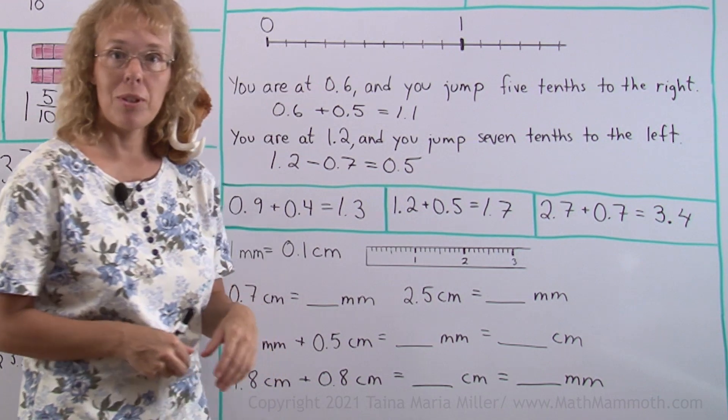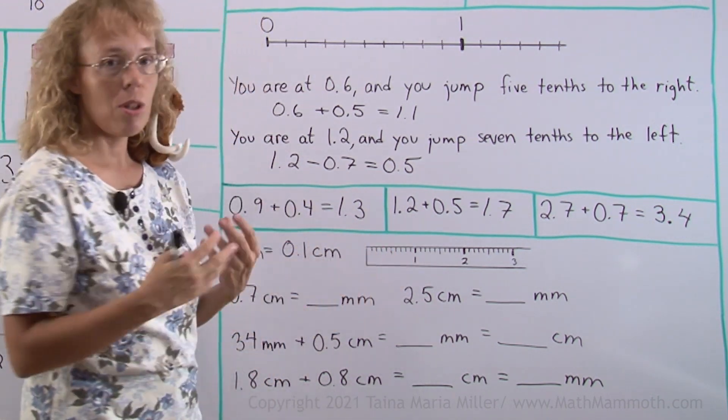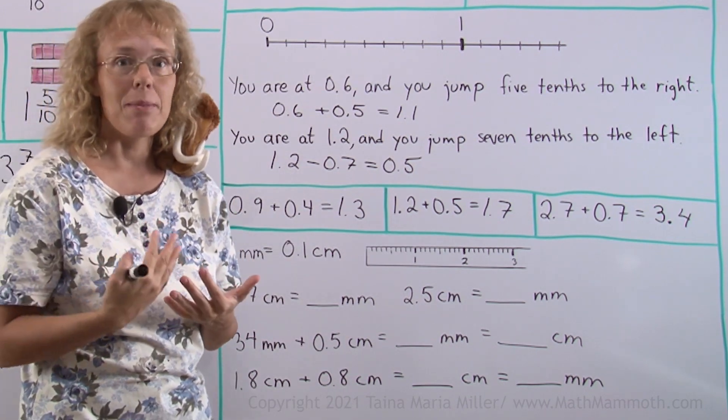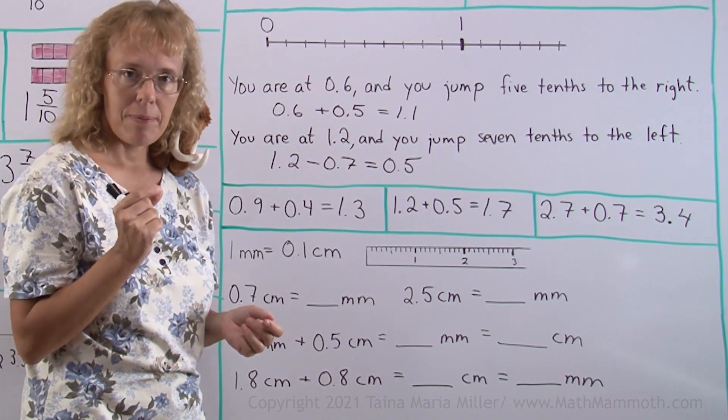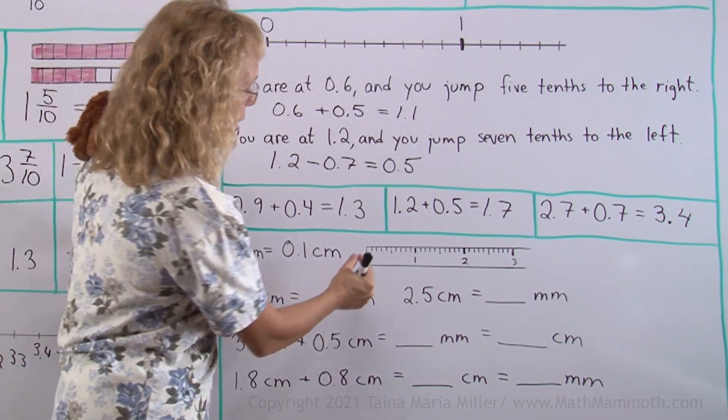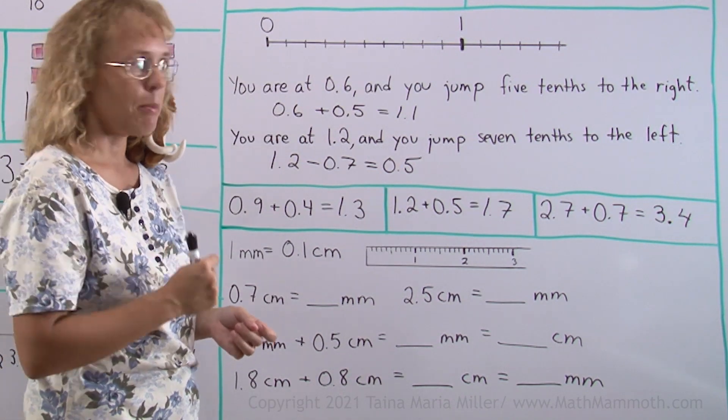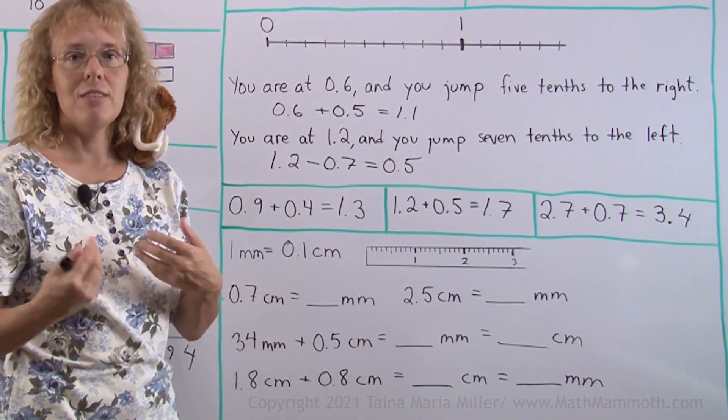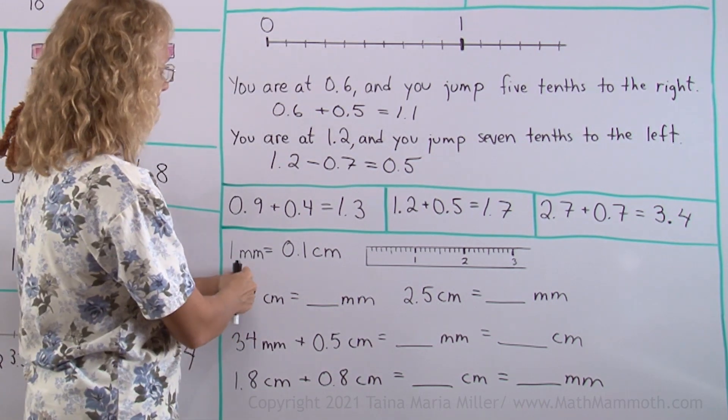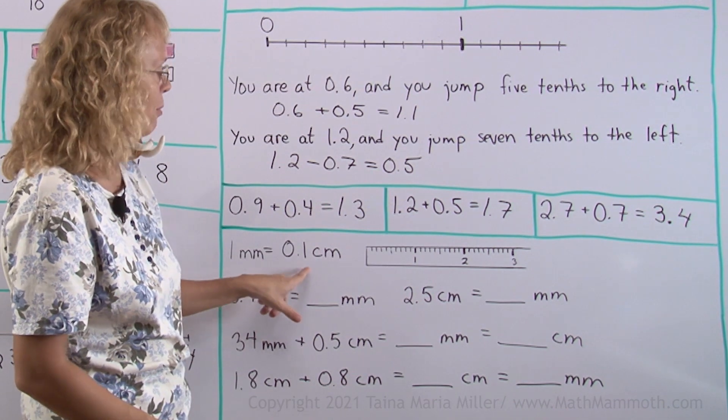Lastly, we will look at a ruler. This is now a zoom in, a magnified view of a normal ruler with centimeters and millimeters. And each centimeter is divided into 10 parts, which are millimeters. Okay. So these little increments here are millimeters. There's 10 in each centimeter. So therefore, 1 millimeter is 1 tenth part of a centimeter. Right? 1 millimeter is 1 tenth of a centimeter, or 0.1 centimeters.